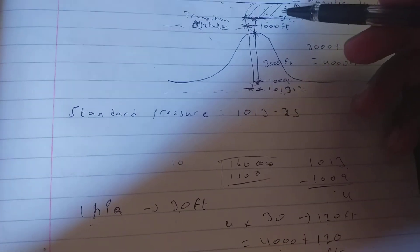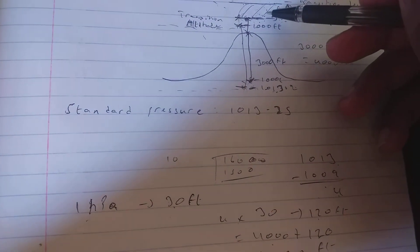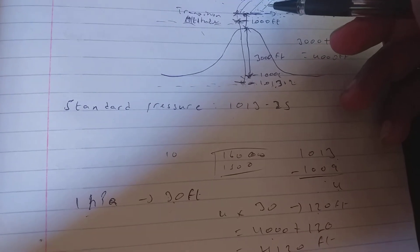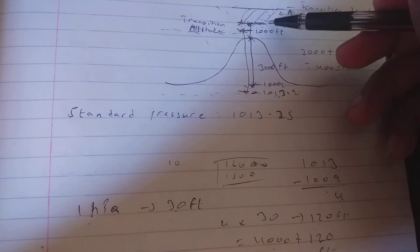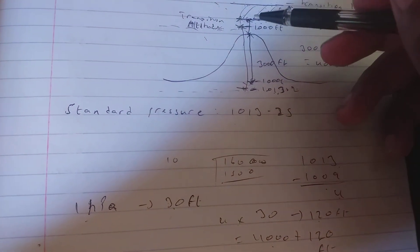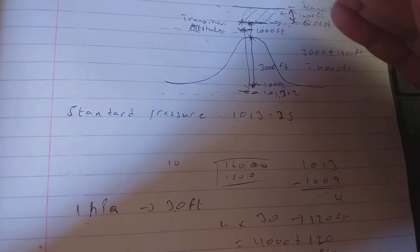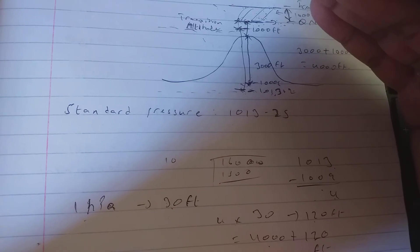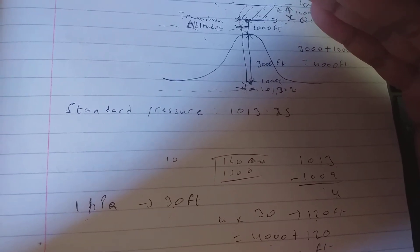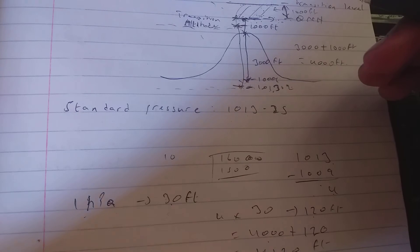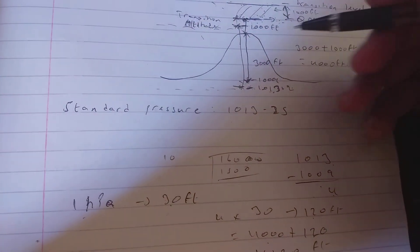In the transition layer we cannot do separation of aircraft. This is standard because aircraft are changing to standard QNH or descending to local QNH.